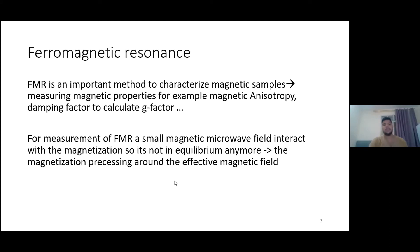So ferromagnetic resonance, also called FMR, is an important method to characterize magnetic samples because we get access to the magnetic properties, for example, the magnetic energy or the damping factor. And we need the damping factor, for example, to calculate the g-factor. For measurement of the ferromagnetic resonance, a small magnetic microwave field interacts with the magnetization of the ferromagnetic layer. If the magnetization is not in equilibrium anymore, if it's not constant, then the magnetization starts to precess around the effective magnetic field.